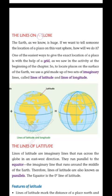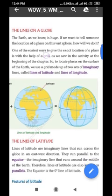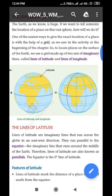To locate places on the surface of the Earth, we use a grid made up of two sets of imaginary lines called lines of latitude and lines of longitude. जैसा कि उसमें दो अलग-अलग रंगों से बताया गया है कि हम कैसे अपनी seat को प्राप्त करते हैं — red और green की मदद से — वैसे ही दो तरह की lines होती हैं: latitude और longitude।